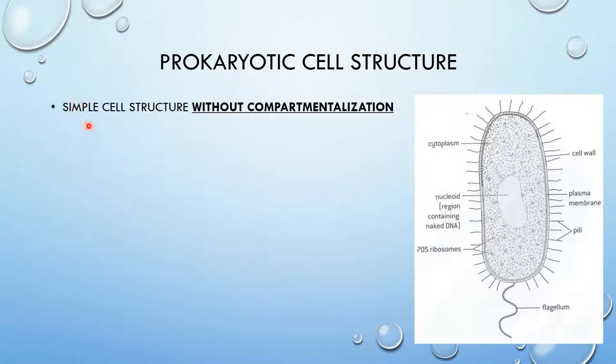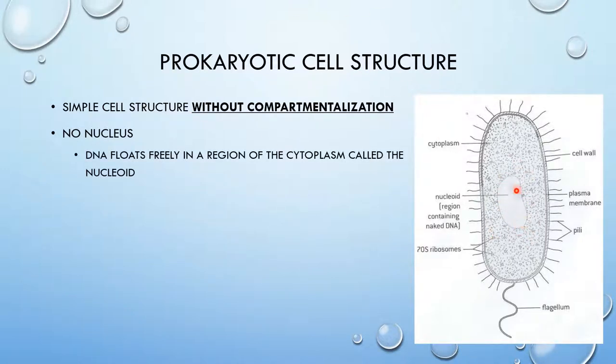Prokaryotic cells have a simple cell structure without compartmentalization, which means that they're not divided into compartments. Prokaryotic cells have no nucleus. Instead, they have a nucleoid region that contains free DNA. It's in the cytoplasm. This region is called a nucleoid.